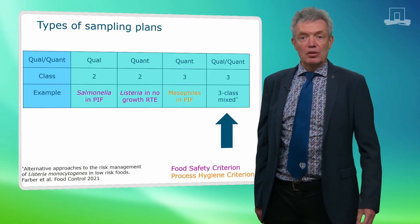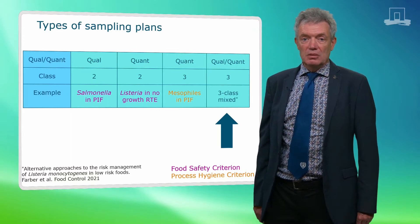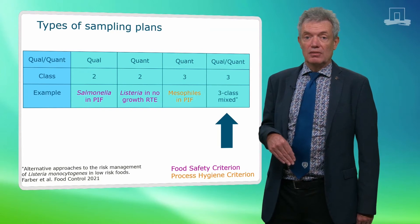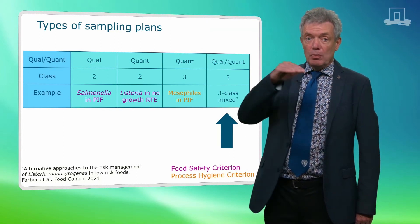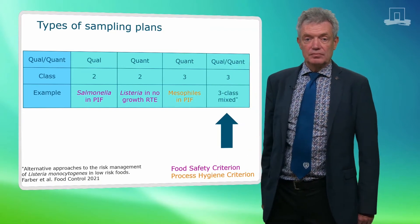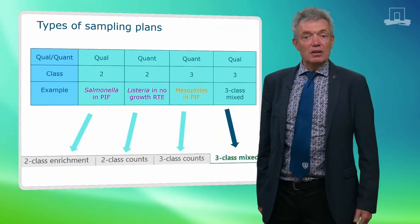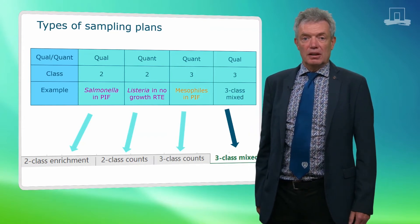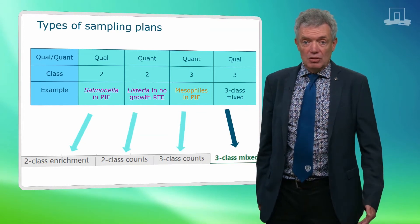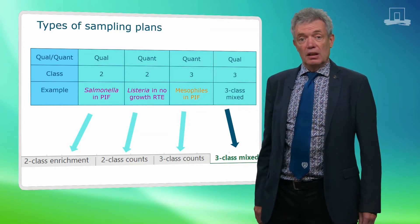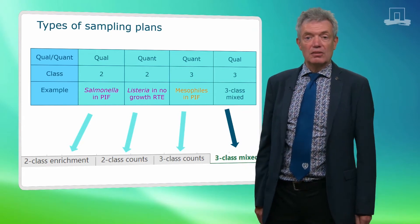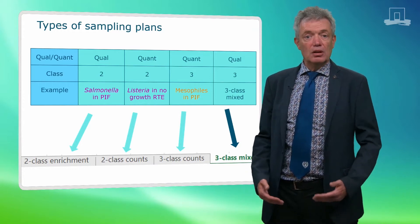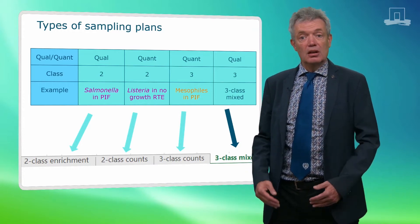In this clip I will focus on three-class mixed plans. This plan has a lower level small m as a quantitative limit and a presence absence test. The upper level big M is a quantitative limit. The ICMSF sampling plan tool has a tab for two-class enrichment, two-class counts, three-class counts, and three-class mixed for the three-class plan with a lower qualitative limit and a higher quantitative limit.